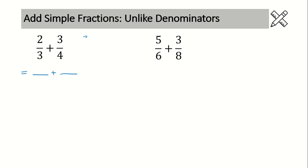Here's how you do it: take your denominators and multiply them together. 3 times 4 is 12. If there are no common factors between your two denominators, you are done — you have the lowest common denominator, which in this case is 12. Now write in a denominator of 12 for each of the two fractions. We're making equivalent fractions. The first fraction was 2 over 3, now it's something over 12. Compare your denominators: going from 3 to 12 means we're multiplying by 4. So multiply 2 times 4 to get 8.